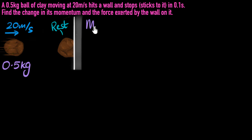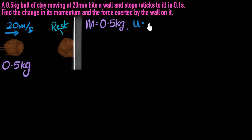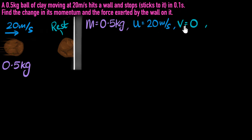Let's write down all the data in one place. We know the mass is 0.5 kilograms. We know the speed of the clay before it hits the wall — we call that the initial velocity U — so U is 20 meters per second. After it hits the wall, its final velocity is zero because it's no longer moving. And the time taken is 0.1 seconds, for it to go from 20 to zero.